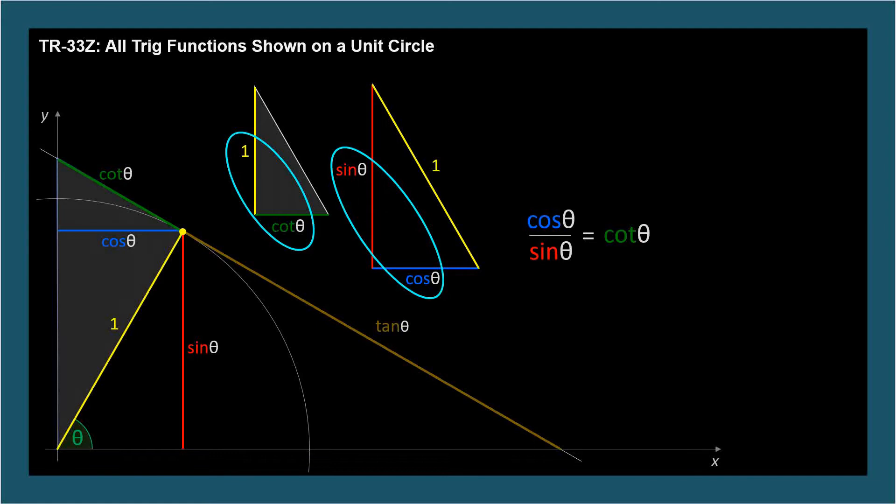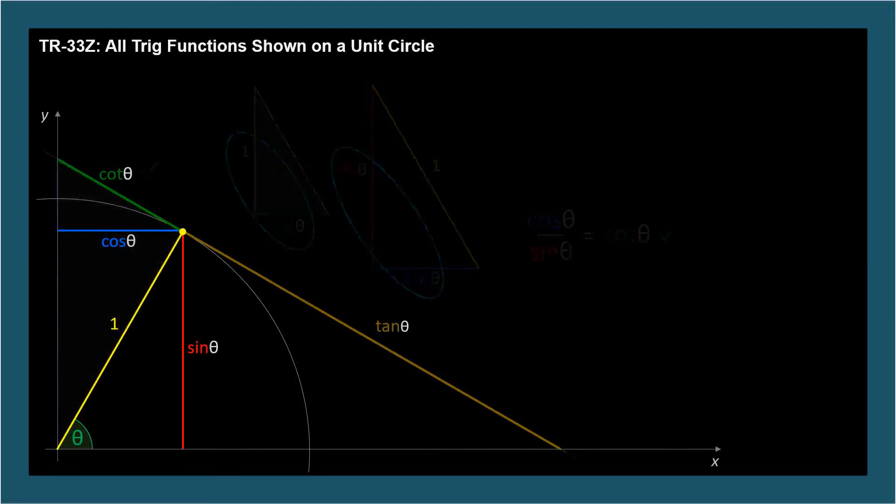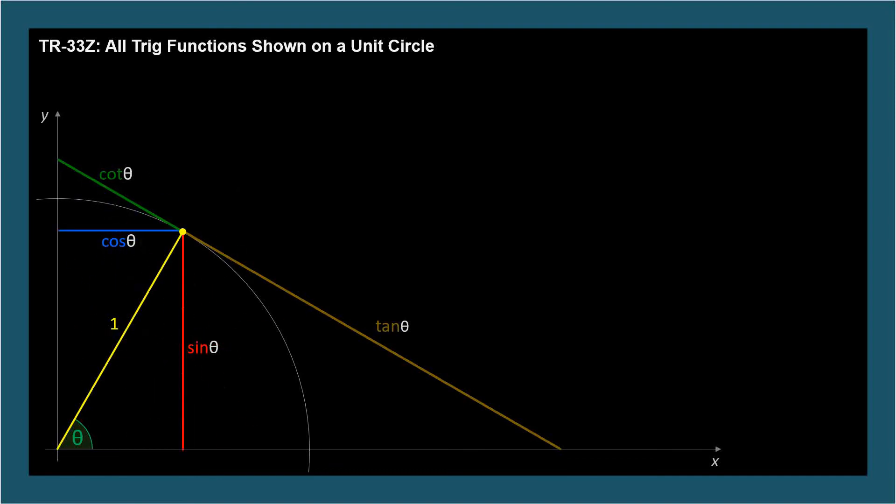We get the equation cosine theta over sine theta equals cotangent theta over 1. So cotangent theta equals cosine over sine, the reciprocal of tangent, which is indeed the cotangent. So we have graphical depictions of cosine, sine, tangent, and cotangent.